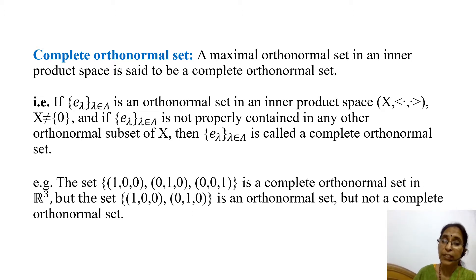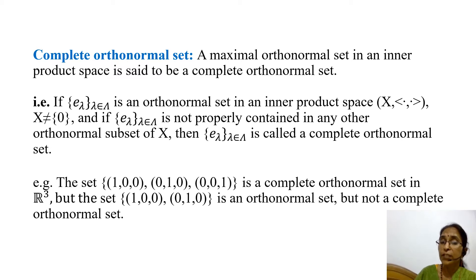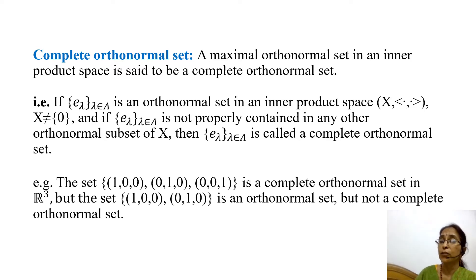But if we take any two vectors from this, that is, if we take the set {(1,0,0), (0,1,0)}, then this is an orthonormal set but not a complete orthonormal set.